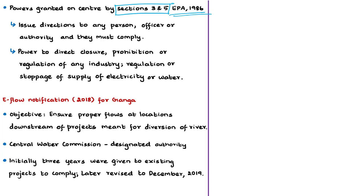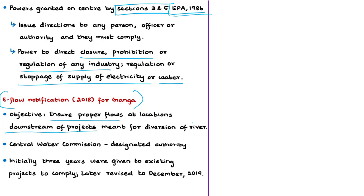These directions include the power to direct closure, prohibition, or regulation of any industry, operation, or process, or the stoppage or regulation of supply of electricity, water, or any other services. Using this power, in 2018 the center issued the e-flow notification to ensure minimum environmental flow in Ganga. This notification aimed at ensuring proper flows at locations downstream of structures or projects meant for diversion of river flows — for purposes like irrigation, hydropower, domestic and industrial requirements. As per the notification, three years were given for existing projects in the river to ensure proper compliance to the mandated environmental flows.